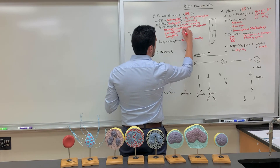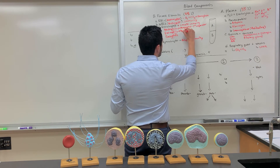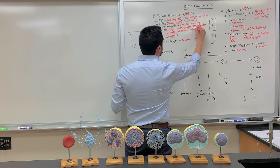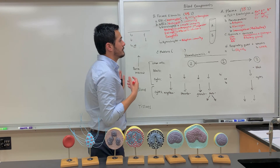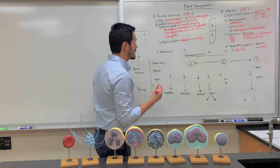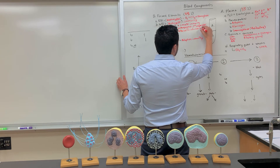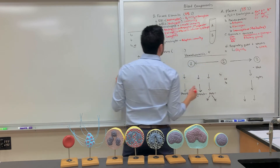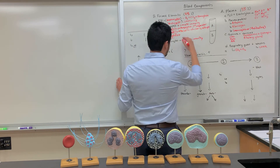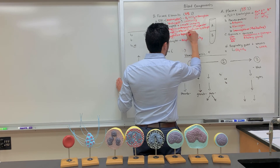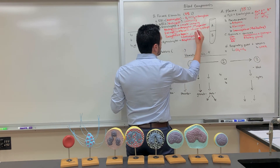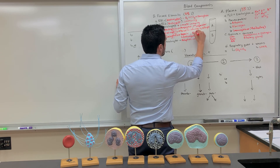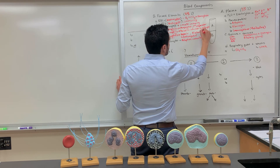Eosinophils are primarily involved in fighting off parasitic infections — parasites are pathogens that require a host in order to stay alive. Eosinophils are also involved with allergies. Basophils secrete heparin, which is an anticoagulant that prevents blood clots from forming. Basophils also produce histamine, an inflammatory mediator that is also involved with allergies.